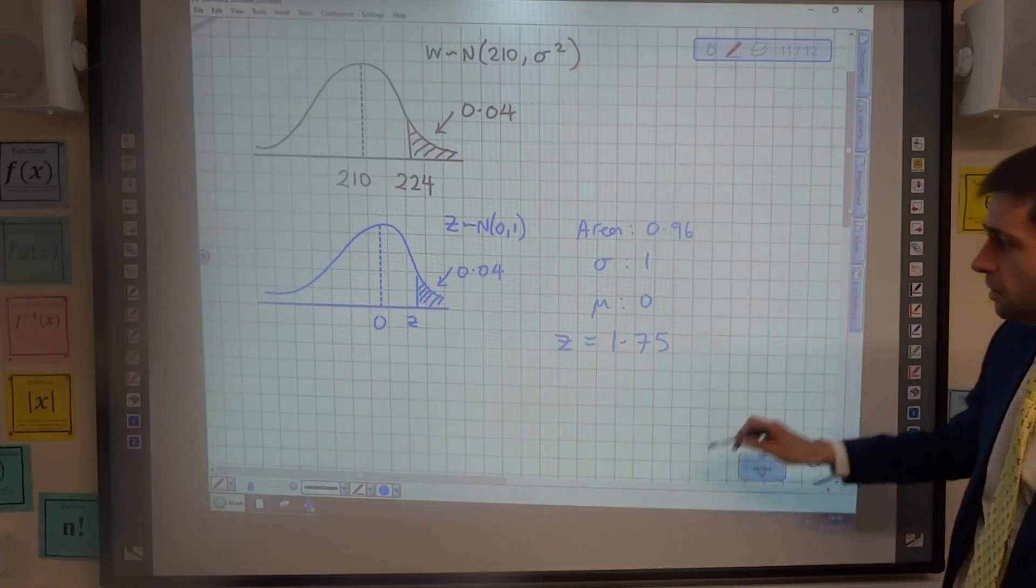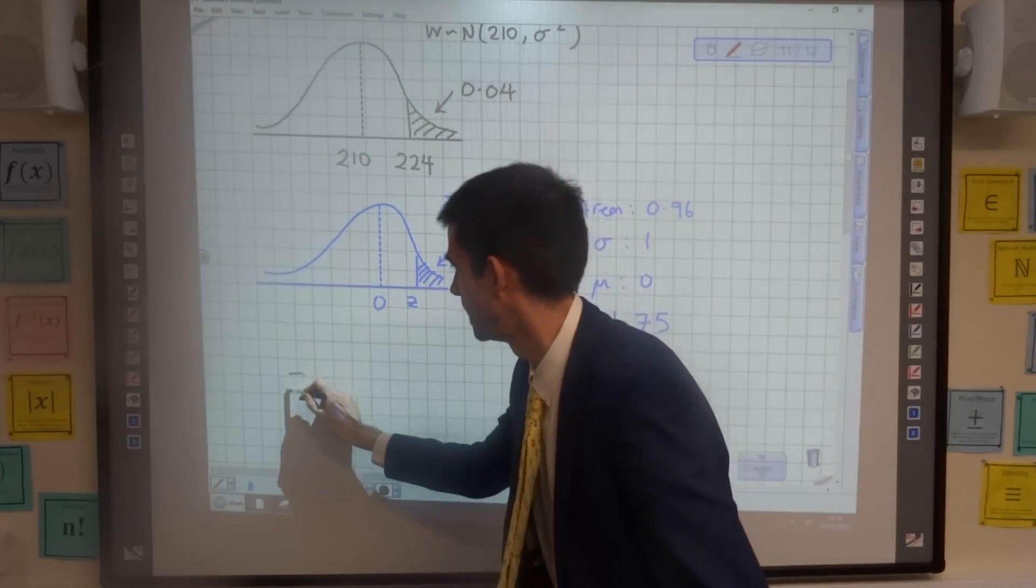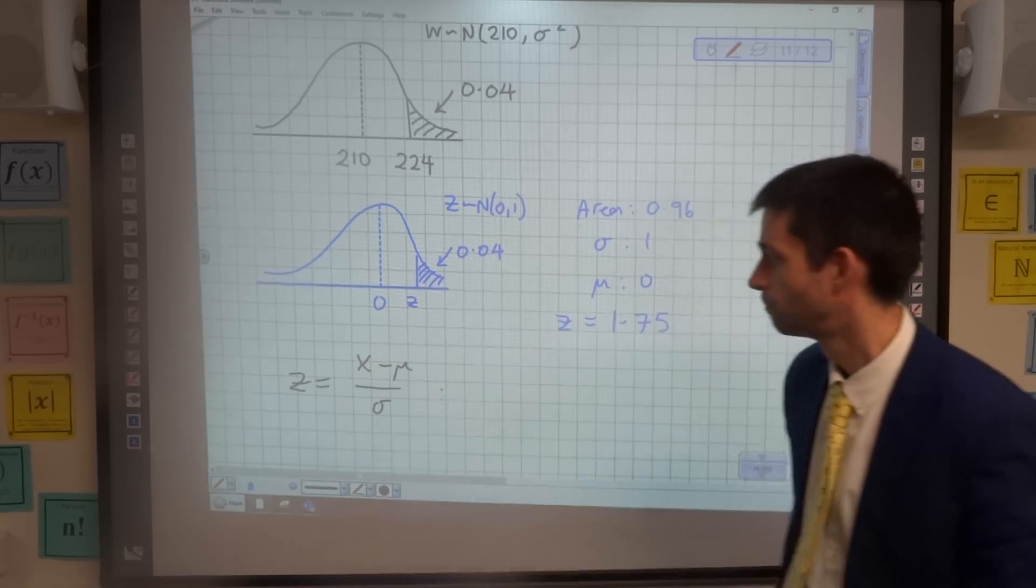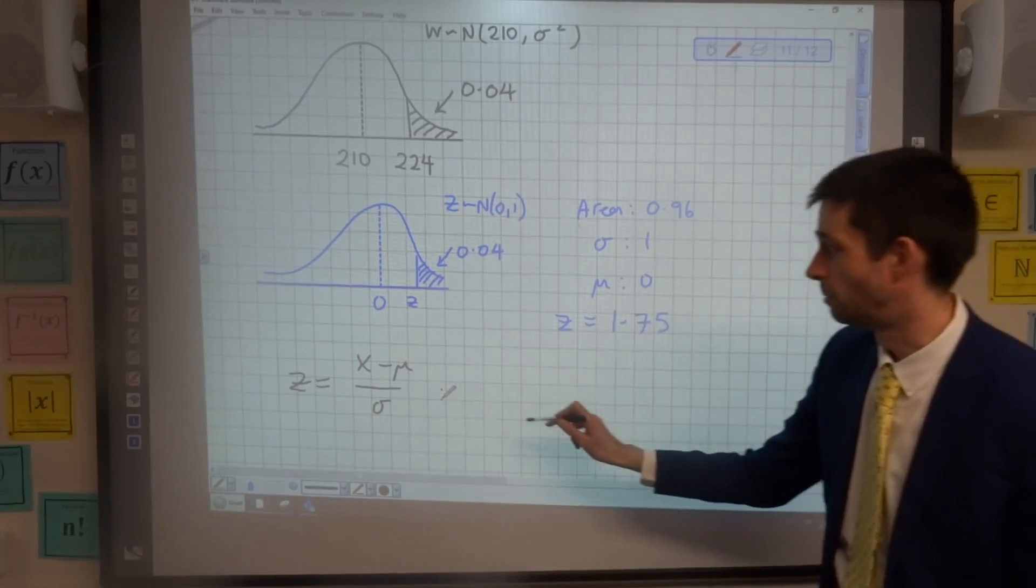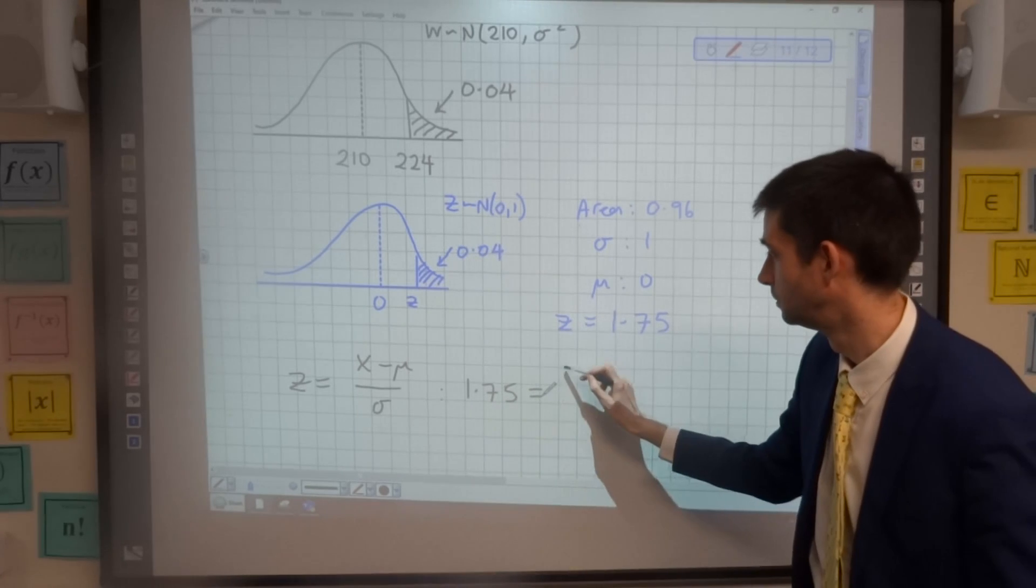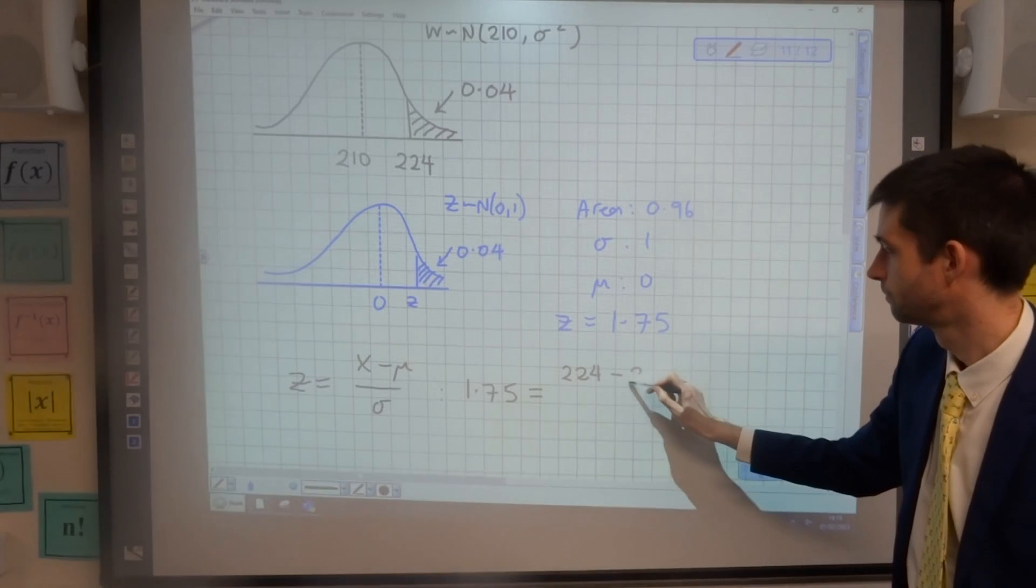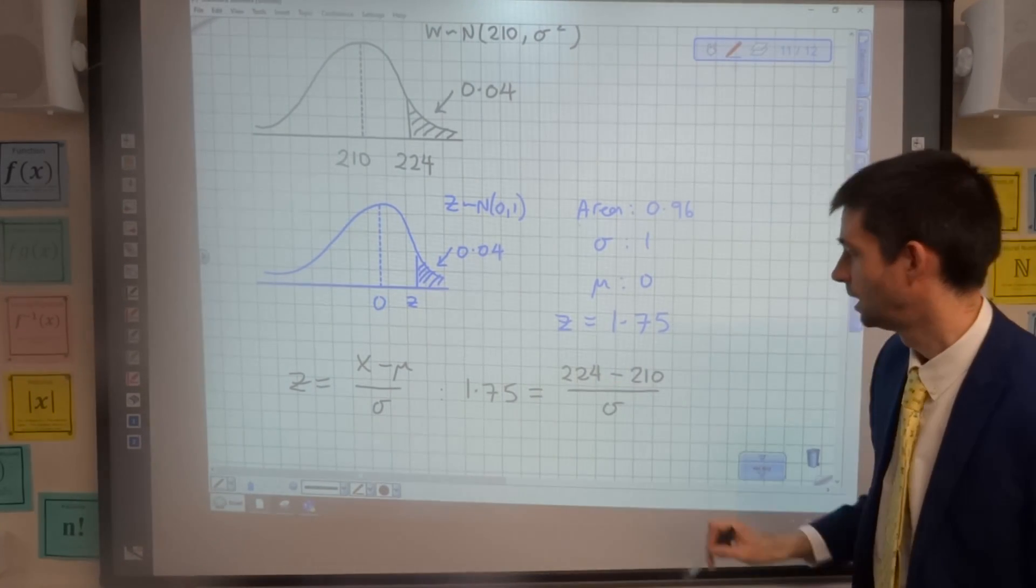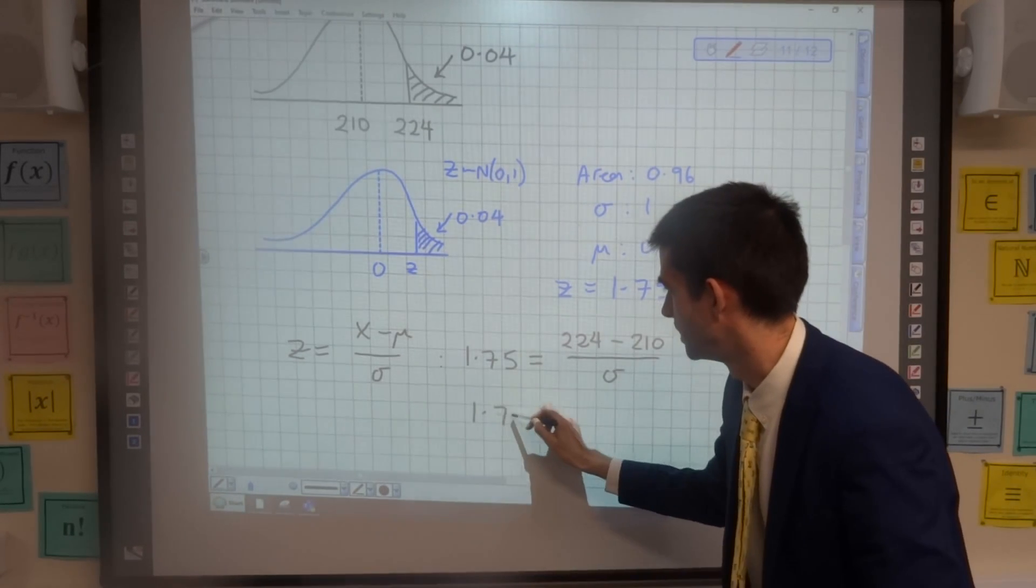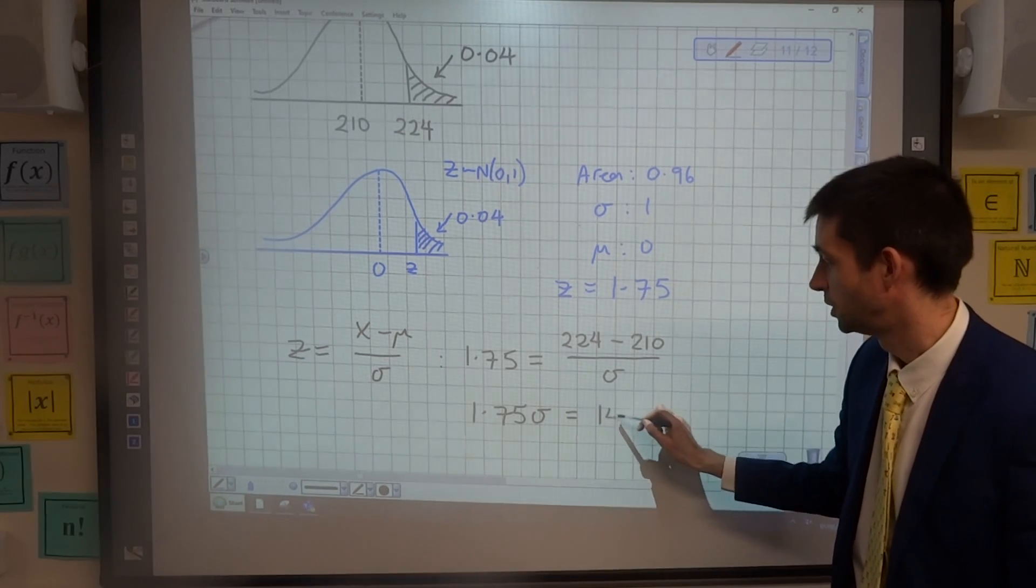Now that I've got my Z value, what I'm going to use is the standardising formula that we talked about in the first video, Z equals X minus mean over standard deviation. I know now that Z is 1.75, my X value is 224, my mean is 210, and the standard deviation is unknown. So if I multiply by the standard deviation, 1.75 times the standard deviation is equal to 14.